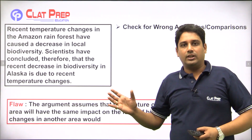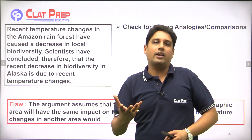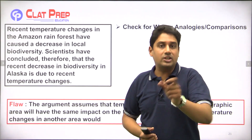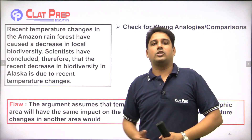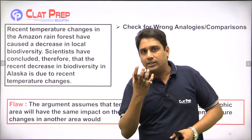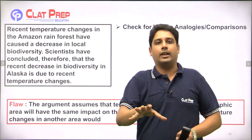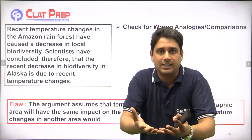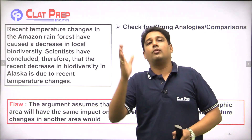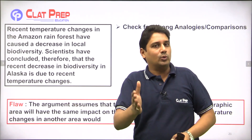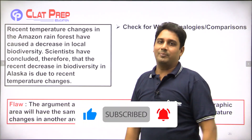So with these examples on the flaw in the argument, let me summarize: in the last video we saw two types of flaws, and in this video we saw three more — generalization, mathematical flaws (with two aspects: average and percentage), and finally wrong comparisons. The flaw in the argument already shows us that we don't have to use any outside facts — we just identify what is wrong in the reasoning itself. Remember, there is a huge difference between weakening the argument and identifying the flaw in the argument. Make sure you are able to distinguish between them. With this I will end this video; for more such videos stay tuned — thank you so much, bye bye.